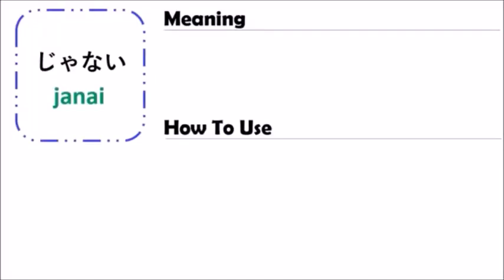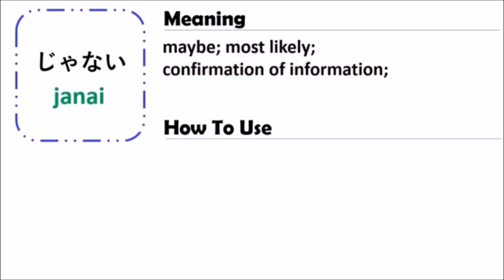Today we're going to learn about ja nai. The grammar of ja nai means maybe, or most likely it's used for confirmation of information. When you use the grammar of ja nai, it means you want to confirm something — information that you are not sure about. You can use ja nai to talk with someone to confirm information.